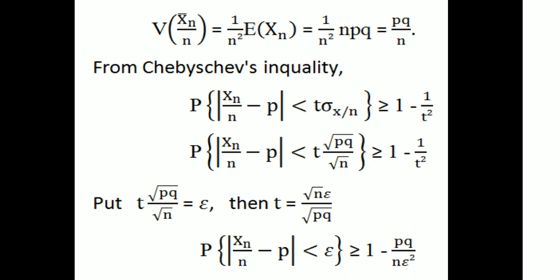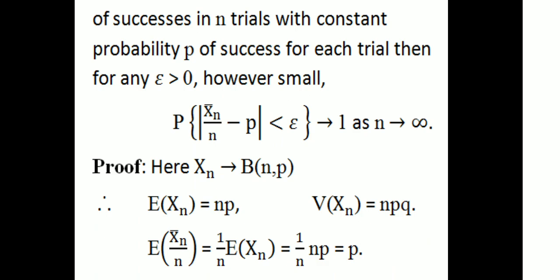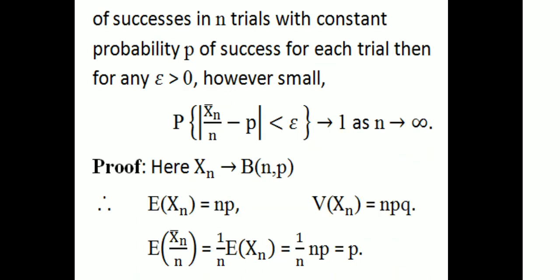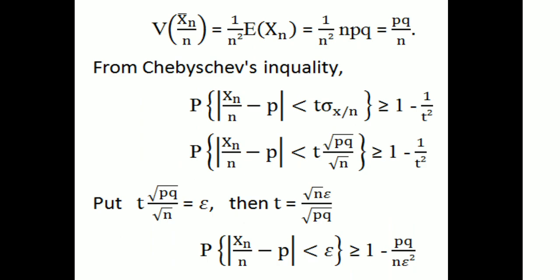Variance of Xn/N equals (1/N²) times variance of Xn, which equals (1/N²) times npq, giving pq/N after cancellation. Then by Chebyshev's inequality, probability of |Xn/N minus p| less than t times sigma(Xn/N) is greater than or equal to 1 minus 1/t squared. The standard deviation sigma equals root(pq/N), so the inequality becomes probability of |Xn/N minus p| less than t times root(pq)/root(N) is greater than or equal to 1 minus 1/t squared.